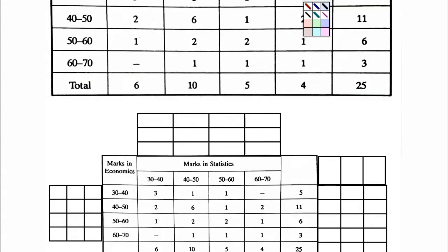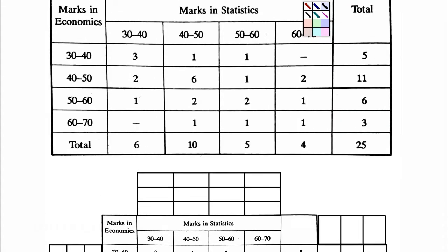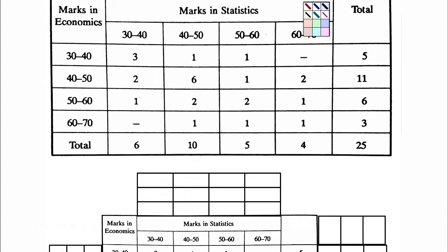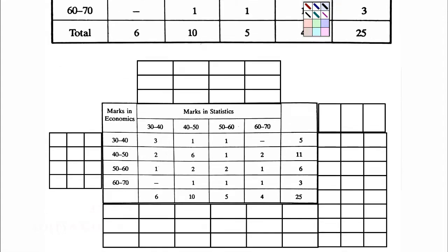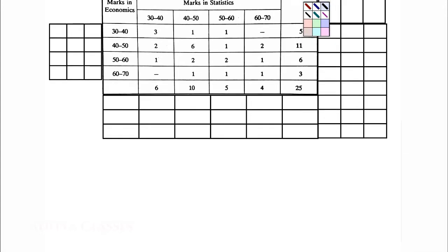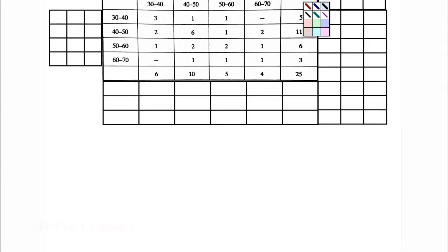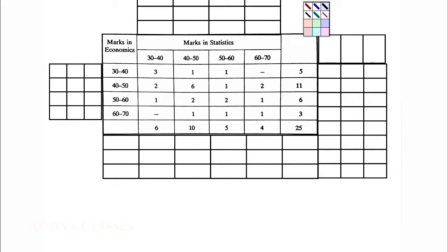We have marks in economics: 30, 40, 50, 60, and 70. And marks in statistics: 30, 40, 50, 60, and 70. By and large it is the same table. Now if you remember the formula for coefficient of correlation, we can go ahead and solve this table.